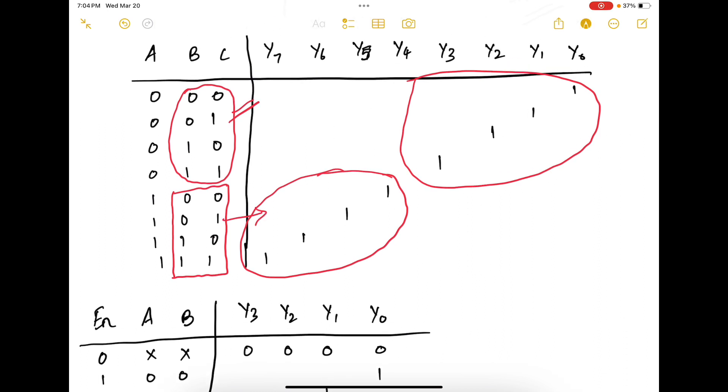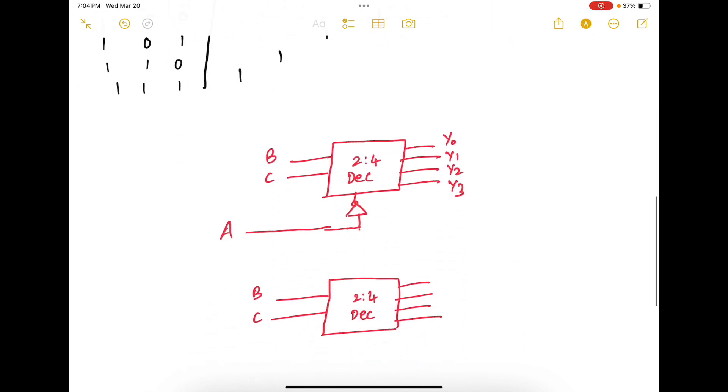And when enable is 1 or when A is 1, I can control this decoder and it gives me control over Y4, Y5, Y6 and Y7. So I can take this as the enable. And that would give me control to Y4, Y5, Y6 and Y7.